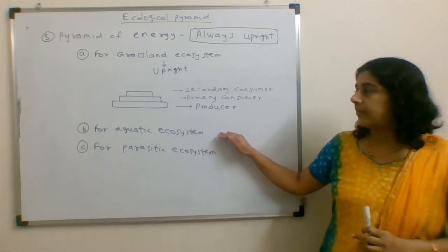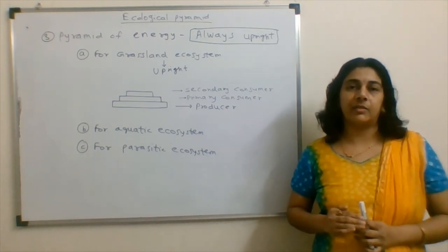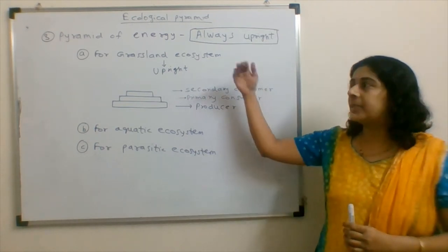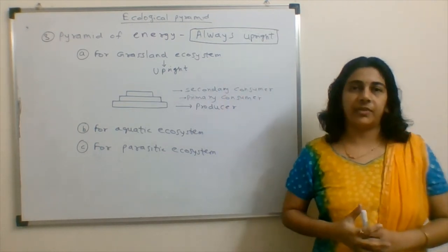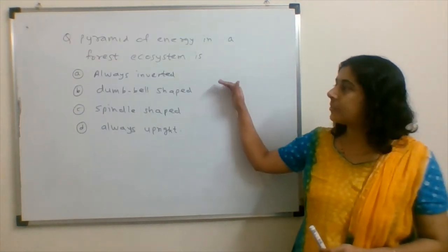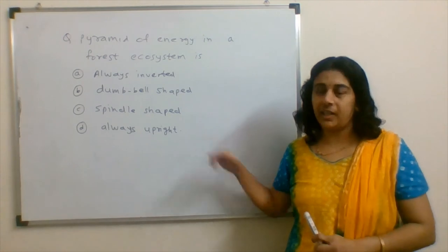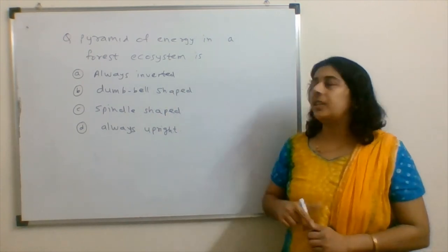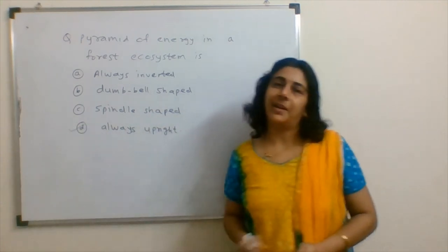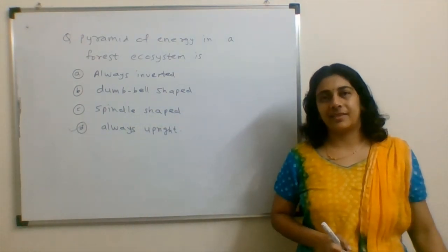Whether it may be an aquatic ecosystem, parasitic ecosystem, or grassland ecosystem, there would be a 10% energy transfer every time. So the answer for this question becomes option D. Pyramid of energy in a forest ecosystem is always upright. This is the correct answer.